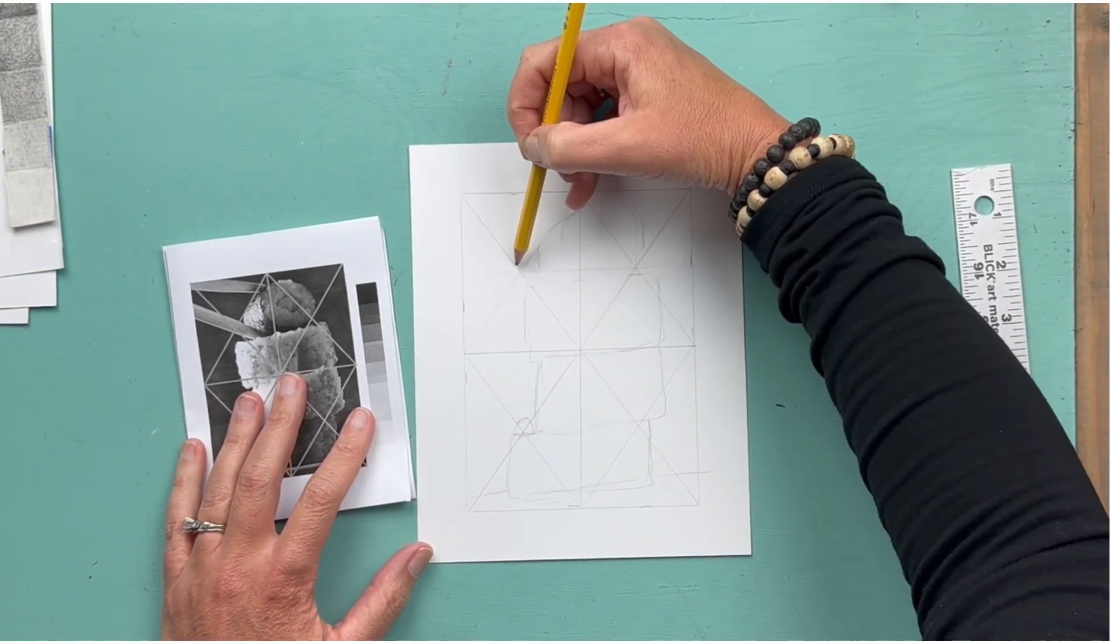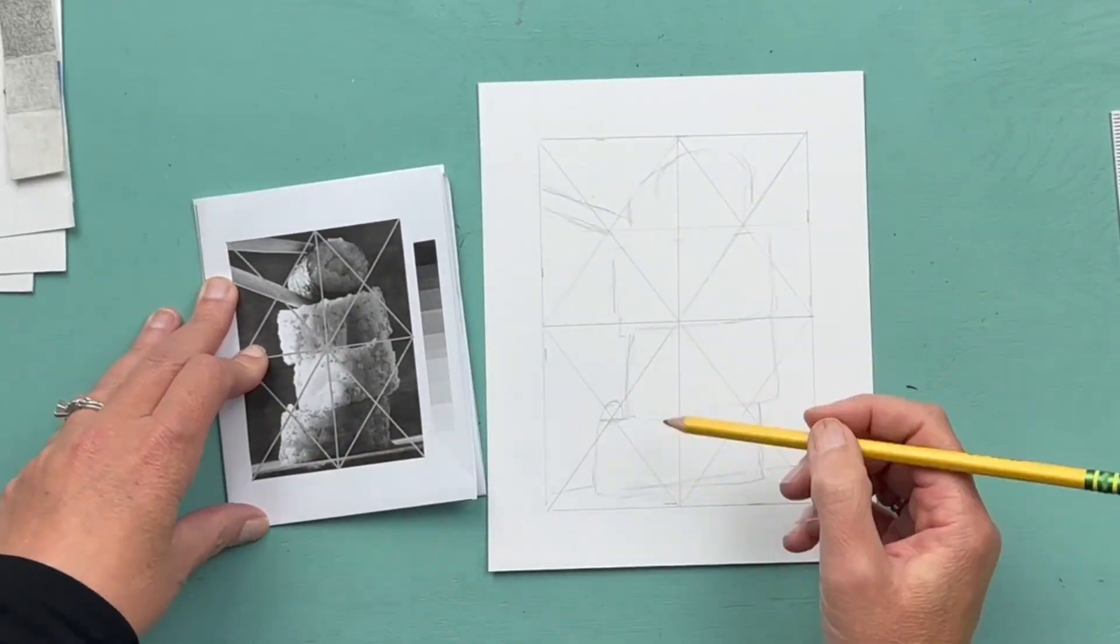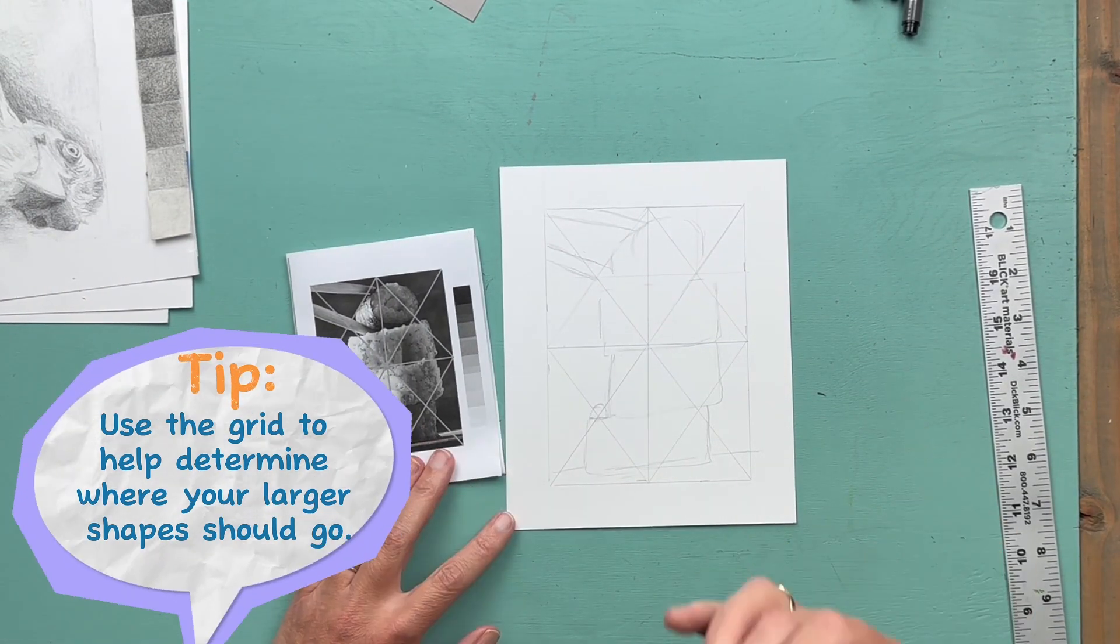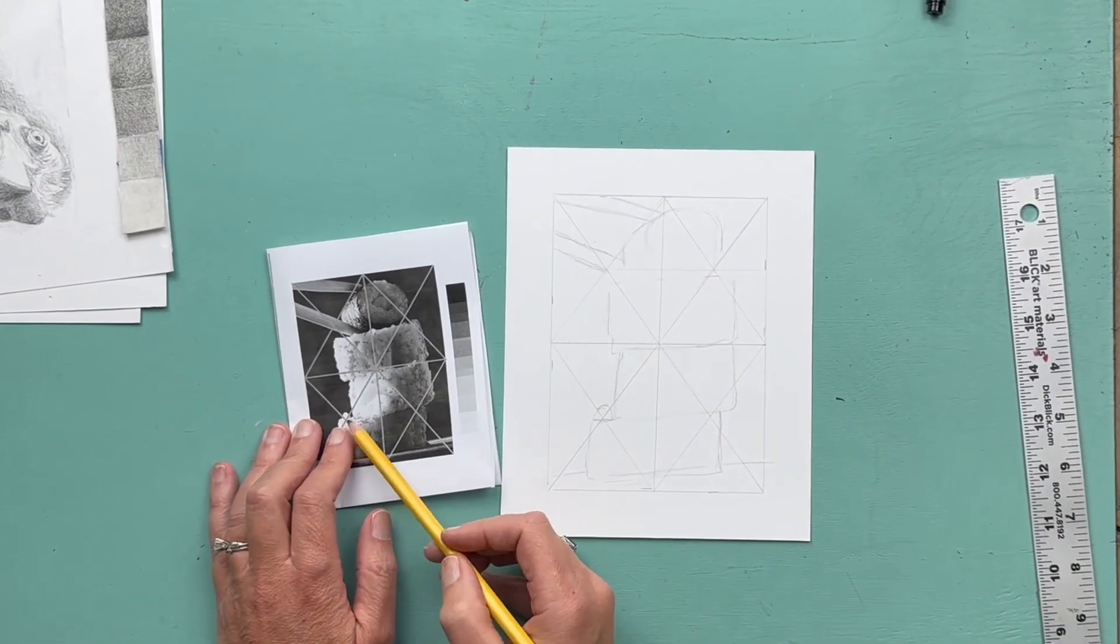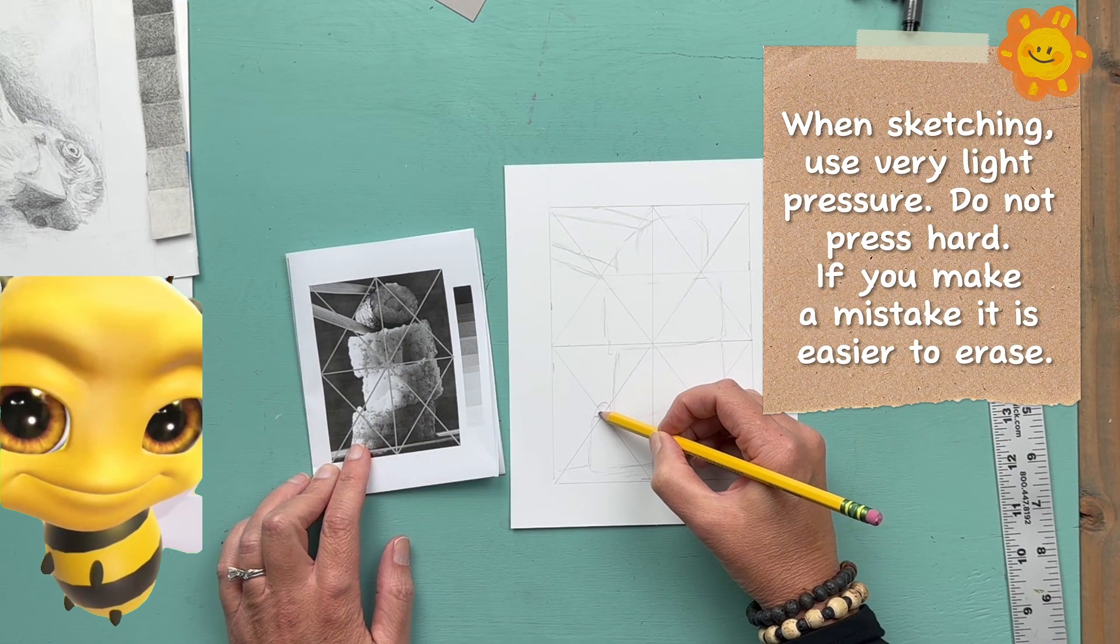I'm not getting any of the details, so notice I'm bouncing around the drawing and using my grid to help me determine where all of the biggest shapes go. I'm not pressing hard and I'm getting everything in very lightly so that if I make a mistake, it's really easy to erase.